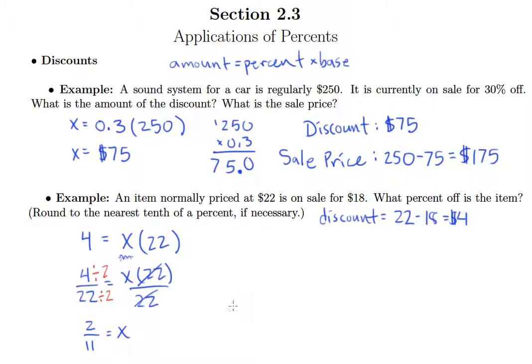But I want to get this into a decimal form. So we'll go ahead and take 2 divided by 11. So 11 goes into 2, of course, 0 times. So we'll add a decimal point and a 0. 11 goes into 20 one time. You get a remainder of 9. Add a 0. 11 goes into 90 eight times. We have a remainder of 2. Add another 0. 11 goes into 20 once.